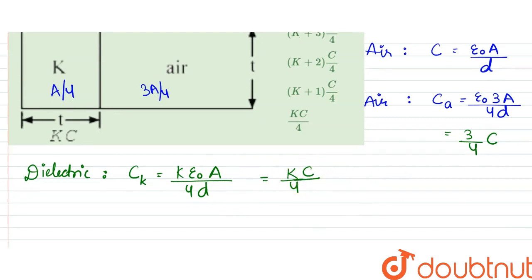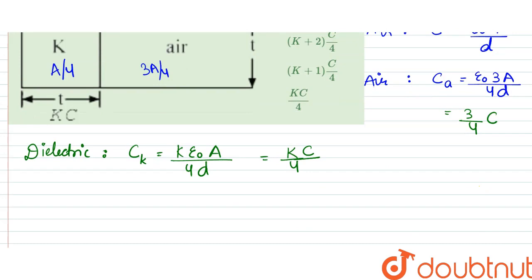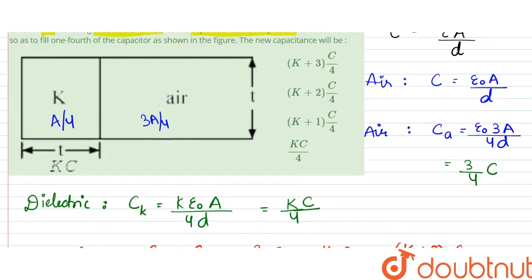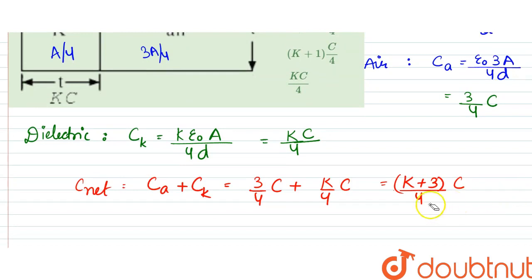C net would be equal to C_a plus C_k, so that would be equal to three by four C plus K by four C, which equals K plus three by four into C.